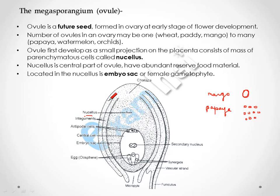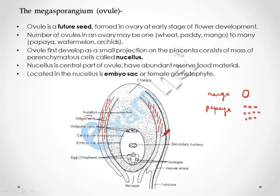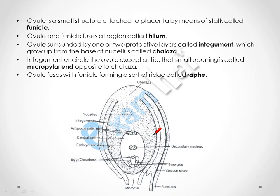The two protective layers covering the ovule are called integuments. The ovule is attached to the placenta by means of a stalk called the funicle. The point of attachment — the point of fusion — of the ovule and funicle is called the hilum.